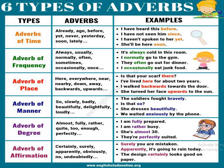The next is adverb of place. 'Is that your scarf there?' — 'there' tells the place. 'I have lived here for about two years' — 'here' tells the place. 'I walked backwards towards the door' — 'backwards' is a place indicator. 'She turned her face upwards to the sun' — 'upwards' tells place. 'Mama is upstairs' — 'upstairs' also indicates place. Words that tell you a place come under adverb of place.